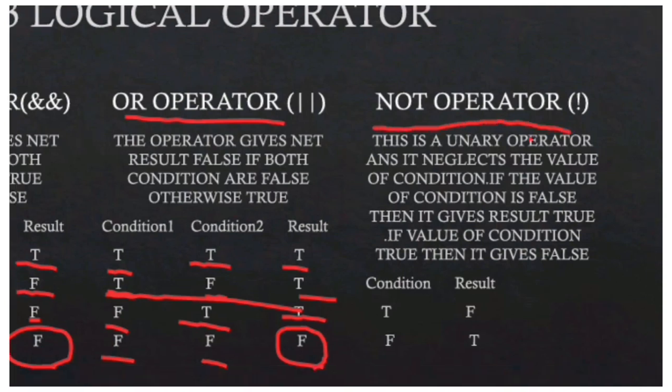The third operator is the NOT operator. It is a unary operator and it negates the value of the condition. If the value of the condition is false, it gives result true. If the value of the condition is true, it gives false. So if the condition is true, the result is false, and if the condition is false, the result is true.